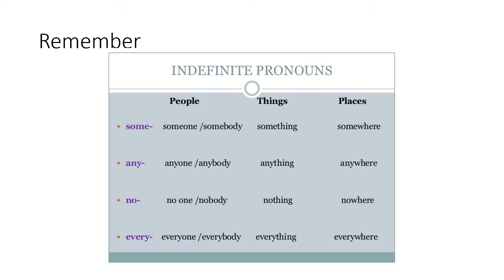Now to sum up — remember, we have four indefinite pronouns: some, any, no, every. They all come before another word to specify people, things, and places. For example: someone/somebody refers to a person; something to things; somewhere to a place. Anyone, anybody; anything; anywhere. No one, nobody; nothing; nowhere. Everyone, everybody; everything; everywhere.